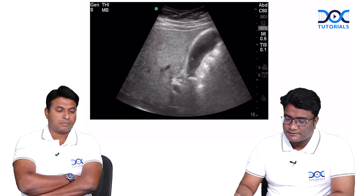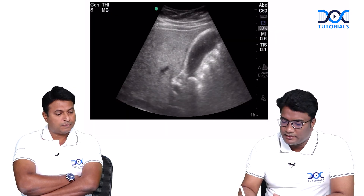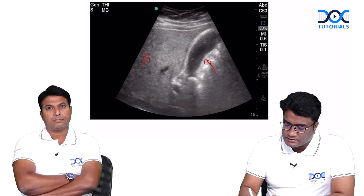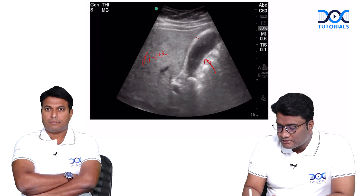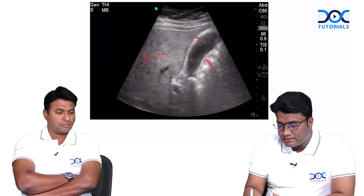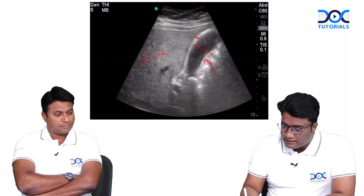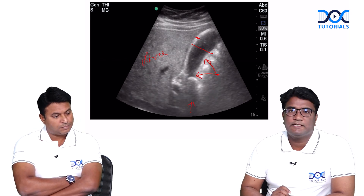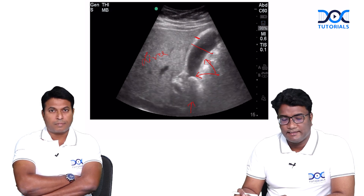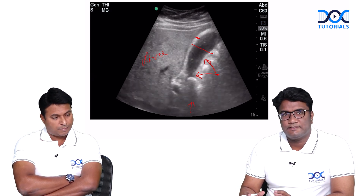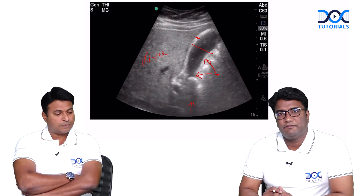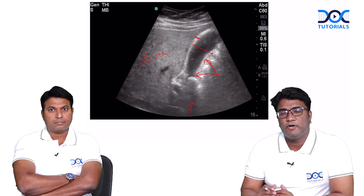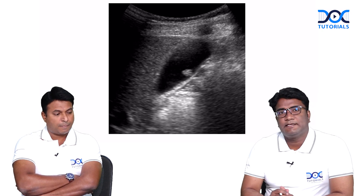Let us see a few more examples. Here you see a very distended gallbladder. This is the region of the liver on ultrasound. In the gallbladder you can see GB wall thickening, luminal distension, and at the neck of the gallbladder you can see a hyperechoic area with a classic posterior acoustic shadowing. This is also a case of GB calculi causing acute cholecystitis with GB wall thickening. There will be positive sonographic Murphy's sign. This is a gallbladder stone which has led to acute cholecystitis in this patient.